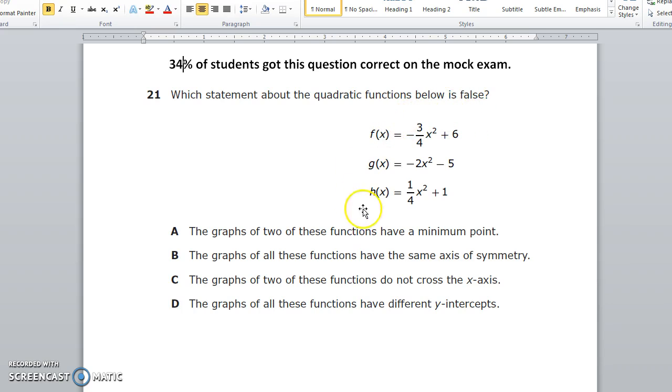So they're giving me three quadratic functions. And when I see the word quadratic, I should be thinking about parabolas. I've got three parabolas right here, F, G, and H. And they want to know which one is false.